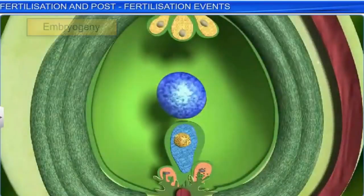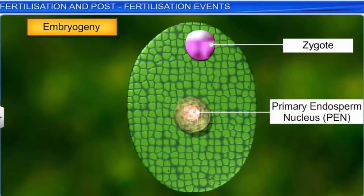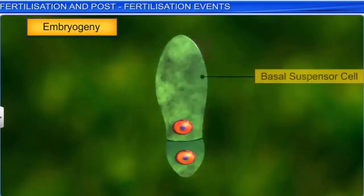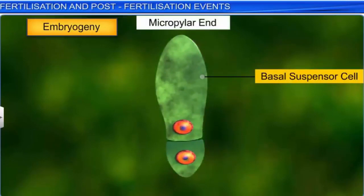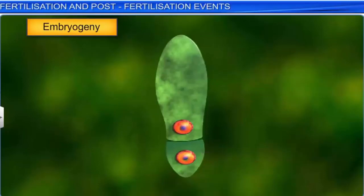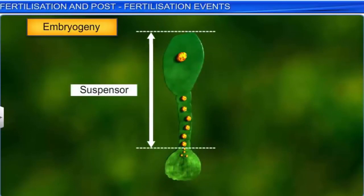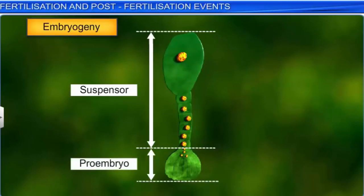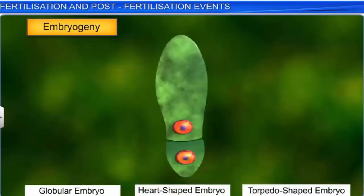Studies by botanists have revealed that during early embryogeny, the zygote divides into two cells — the basal suspensor cell towards the micropyle end, and a terminal embryo cell towards the chalazal end. The basal suspensor cell further undergoes mitotic divisions and forms four to eight cells, which push the terminal embryo cell into the tissue of the endosperm to allow it to derive nourishment. Moreover, the terminal embryo cell also undergoes divisions to form a group of cells known as proembryo, which subsequently develops into a globular, heart-shaped, and torpedo-shaped mature embryo.